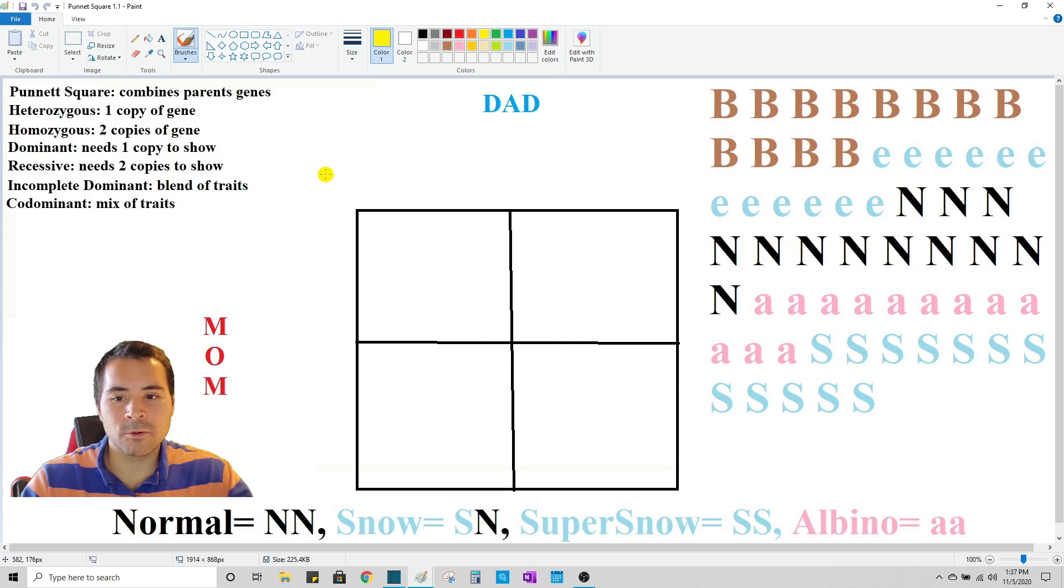Couple vocabulary terms we're going to need to know for this. Genes are represented by letters. For example, the brown eye gene is represented by capital B, capital B. The blue eye gene in humans is represented by lowercase e, lowercase e. So for the sake of this video, let's talk about two types of genes. Heterozygous genes and homozygous genes. Heterozygous genes means that you only have one copy of that trait in your DNA. Homozygous genes means that you have two copies of that trait in your DNA.